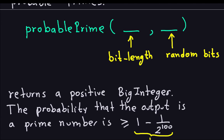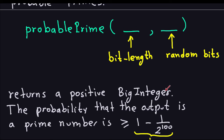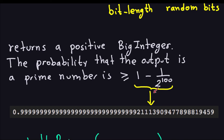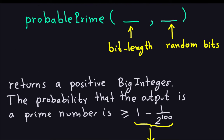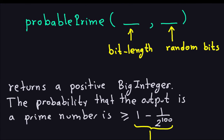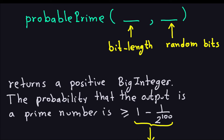This method returns a positive BigInteger type — it will not give you negatives. If you want something negative, just put a minus in front of it. The probability that the output is a prime number is always bigger than or equal to 1 minus 1 over 2 to the 100, which is a very high probability — essentially zero-point-a-bunch-of-nines, very close to 1. The other way to produce prime numbers allows you to set the probability yourself, but for this method the probability is already set for you.